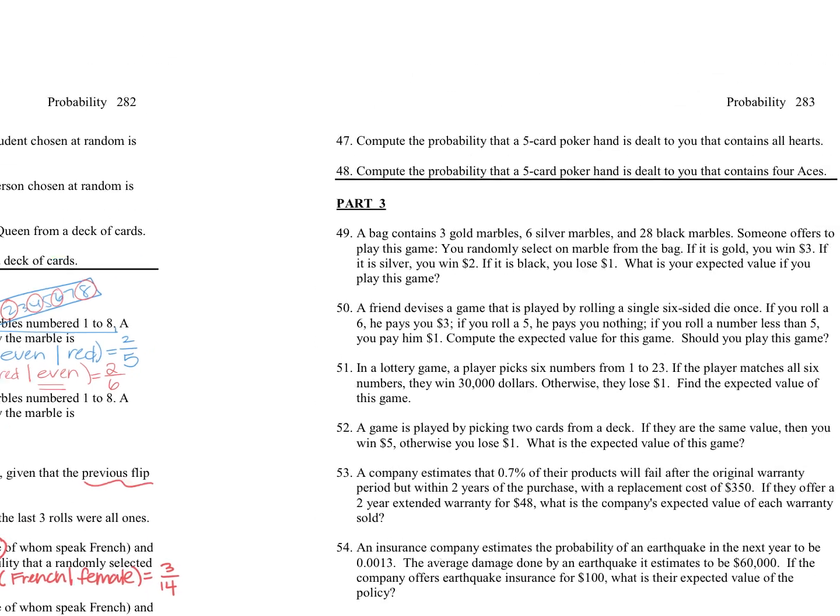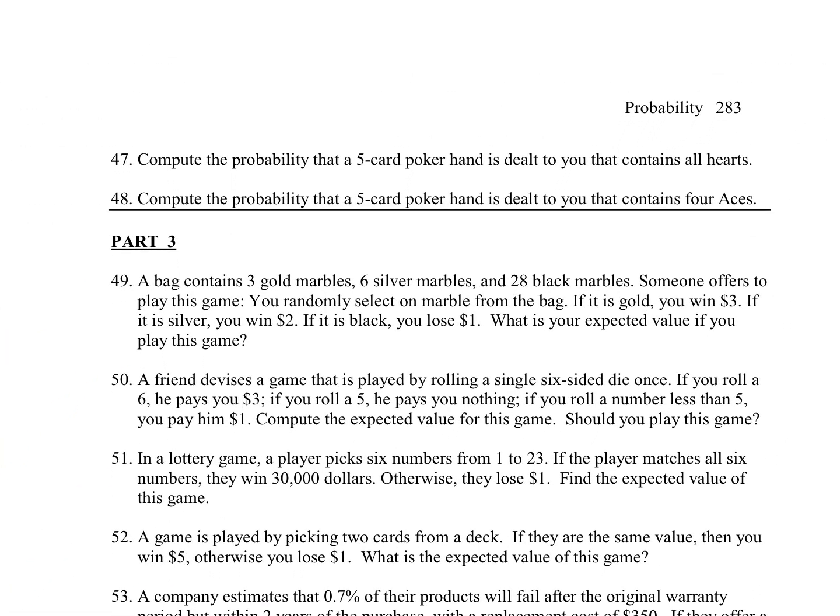And we have one more for part two. Question number 47. It says, compute the probability that a five-card poker hand is dealt to you that contains all hearts. Another name for that, if you play poker or you've seen anything, it's called a flush. Now, it's a particular flush. It's made up of only hearts.